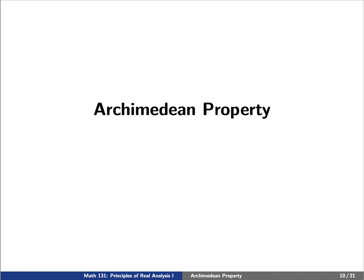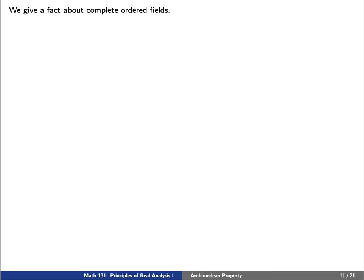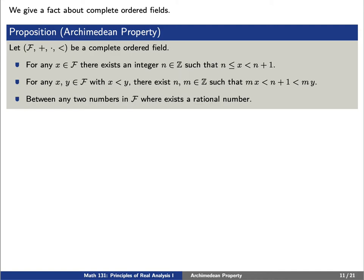Using all of this, we'd like to state a property about complete ordered fields called the Archimedean property. Let our script f be a complete ordered field. We have three properties to state. First, let x be an element of f; then there exists an integer n such that n is less than or equal to x and n plus 1 is greater than x — intuitively, n is the floor of x. Second, choose x less than y in f; then there exist integers m and n such that m times x is less than n plus 1, which is less than m times y. Finally, between any two numbers in f, there exists a rational number.